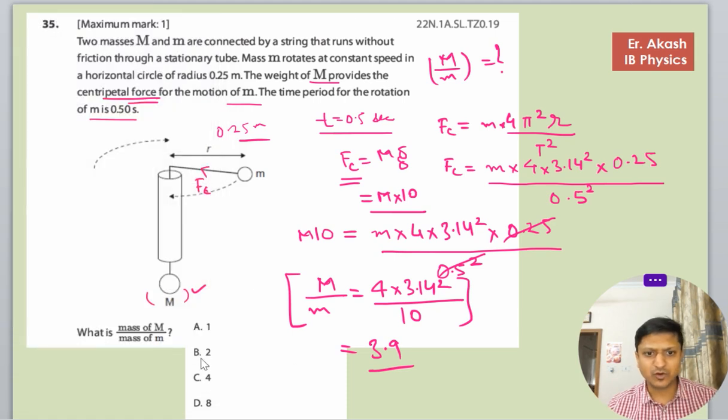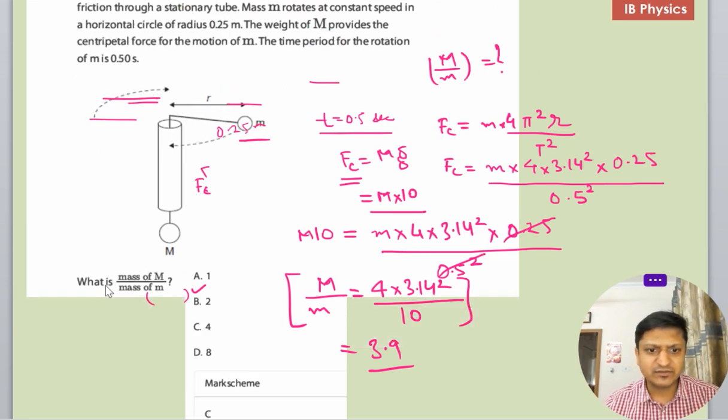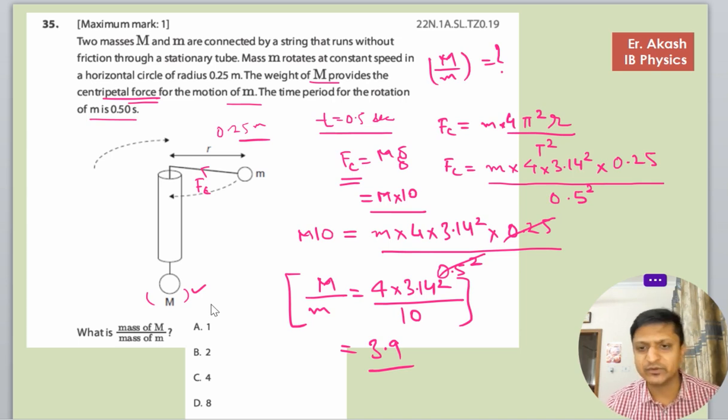So the option is C. Option C says 4, which is very equal here. It depends whether you're using 10 or 9.8 for gravitational g. The mark scheme confirms option C is the right option.